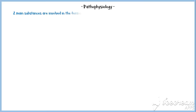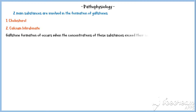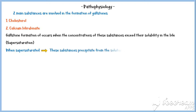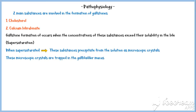Two main substances are involved in the formation of gallstones: cholesterol and calcium bilirubinate. Gallstone formation occurs when the concentrations of these substances exceed their solubility in bile, which is known as supersaturation. When bile is supersaturated with these substances, they precipitate from the solution as microscopic crystals. These microscopic crystals are trapped in the gallbladder mucus, producing gallbladder sludge.